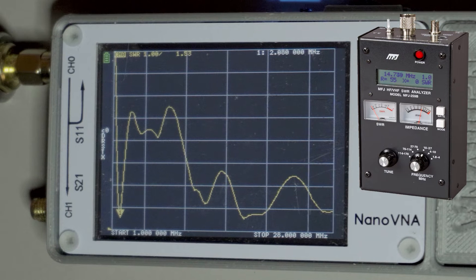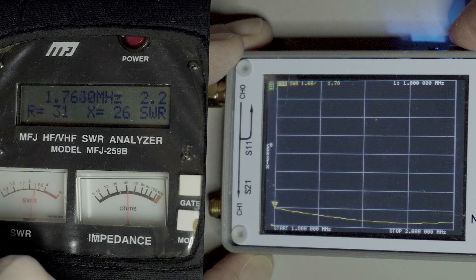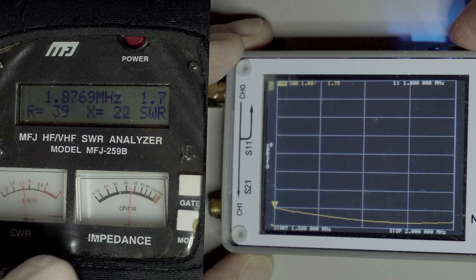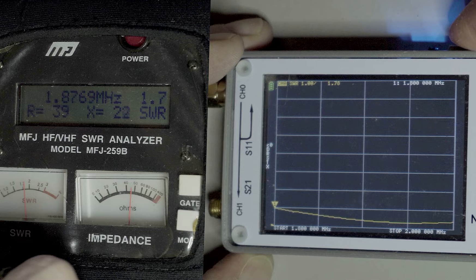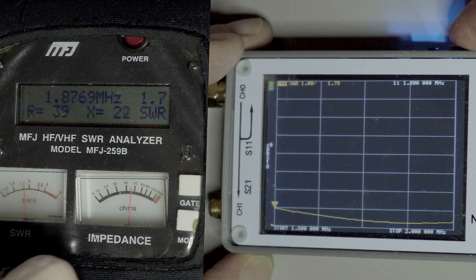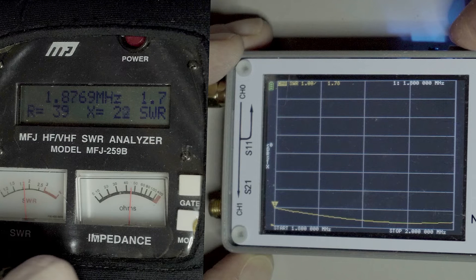If it doesn't seem well tuned on any of the bands, that's the reason why. Starting off on 160 meters, they both seem very similar. The MFJ reading 1.7, the Nano VNA reading 1.78.